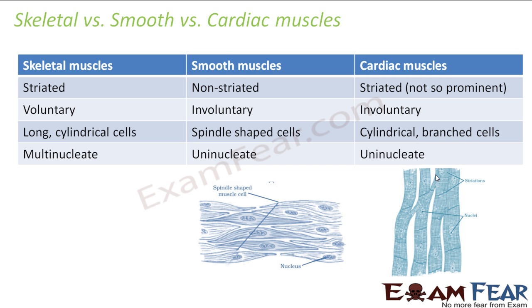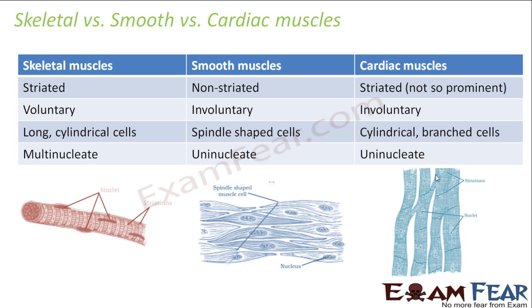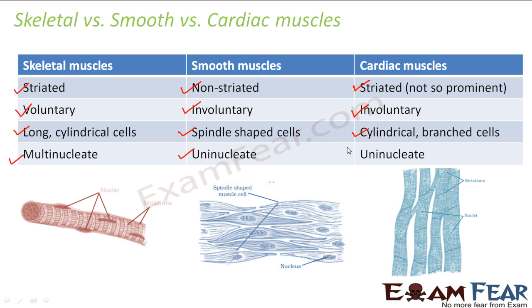Let us have a quick comparison between the three types of muscles. Skeletal muscles are striated; smooth muscles are non-striated; cardiac muscles are striated but not so prominent. Skeletal muscles are voluntary; smooth and cardiac muscles are both involuntary. Regarding cell structure: skeletal muscles have long cylindrical cells; smooth muscles have spindle-shaped cells; cardiac muscles have cylindrical branched cells connected in a branching pattern. Regarding nuclei: skeletal muscles are multinucleate; smooth and cardiac muscles are both uninucleate — one nucleus per cell.